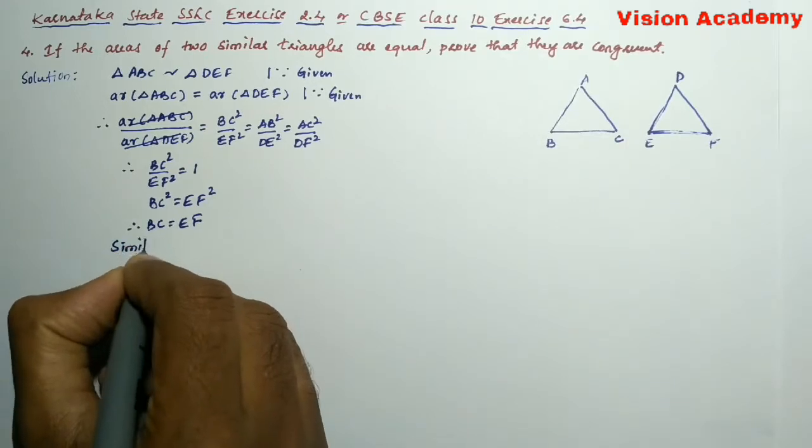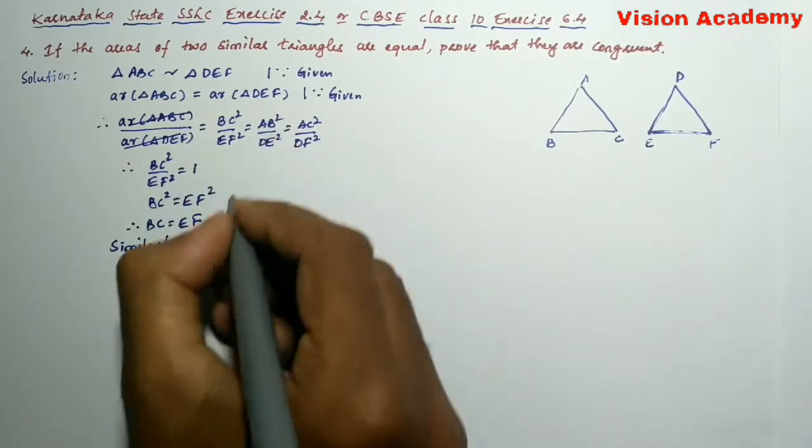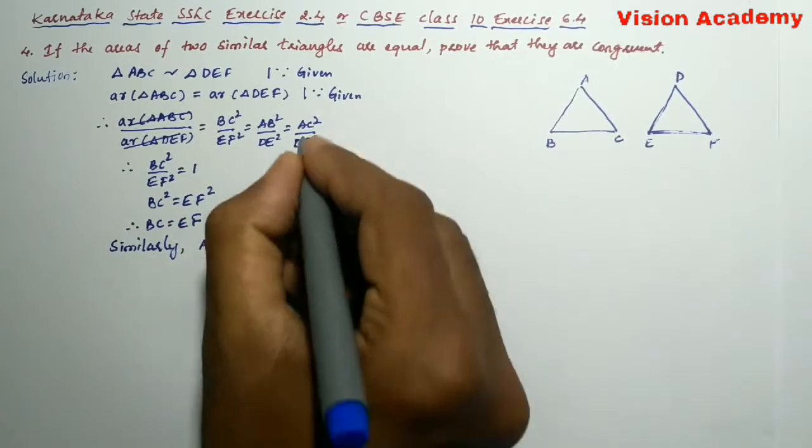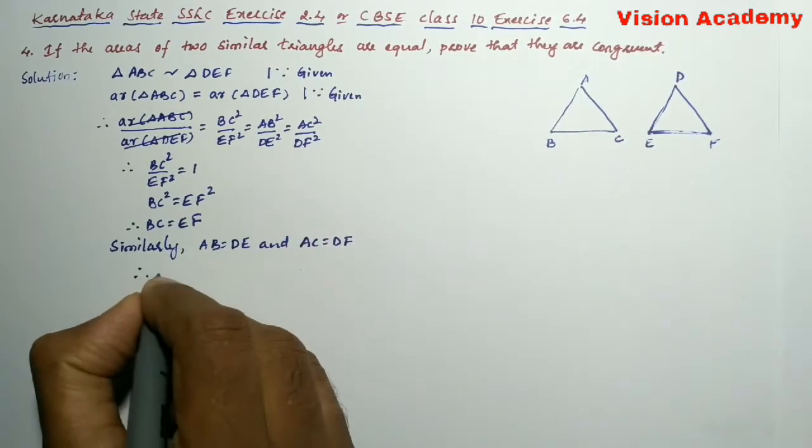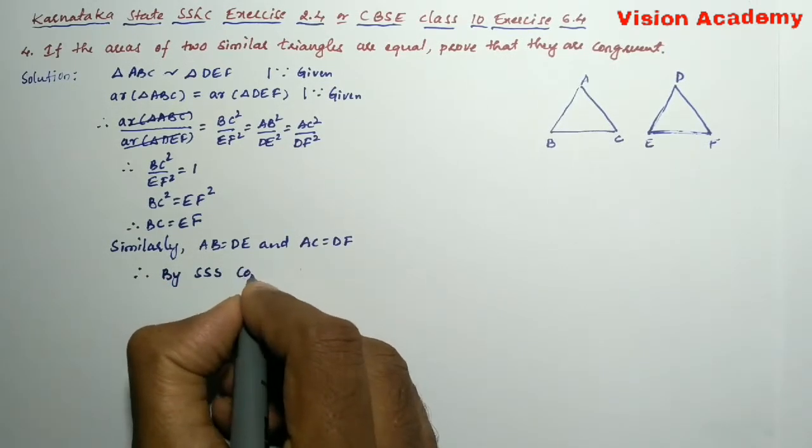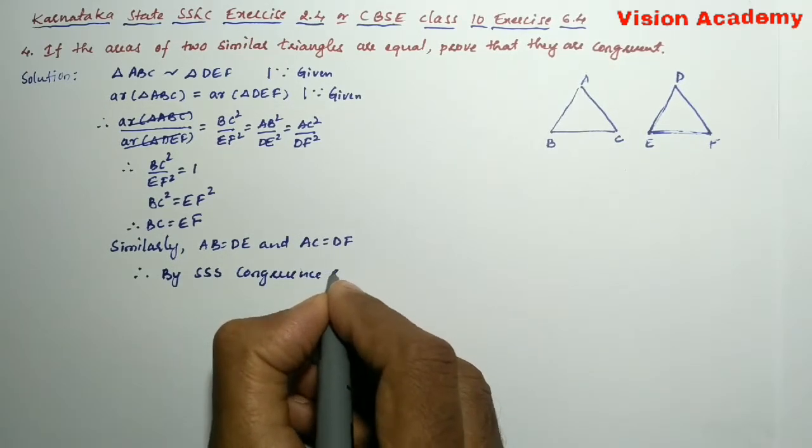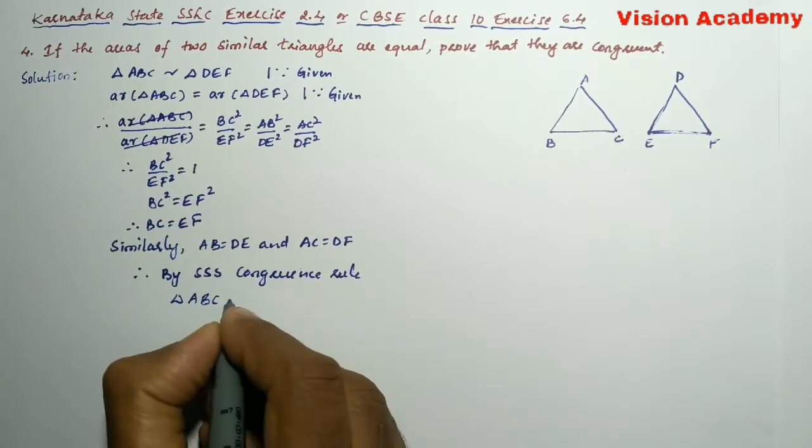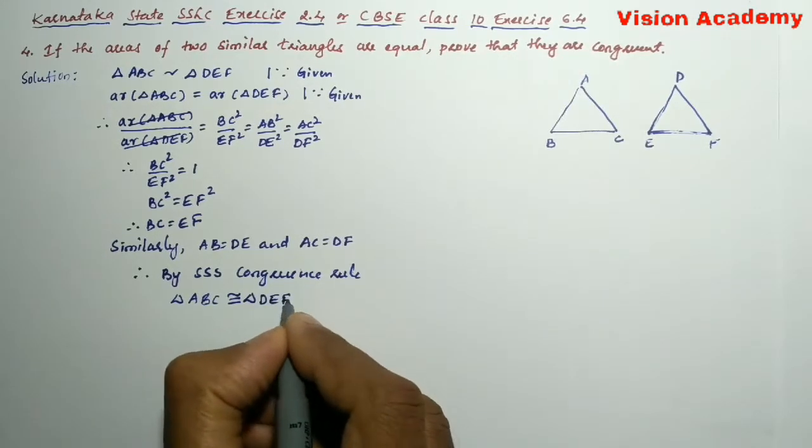Similarly, here, AB is equal to DE and AC is equal to DF. Therefore, by side, side, side congruence rule, we can say triangle ABC is congruent to triangle DEF.